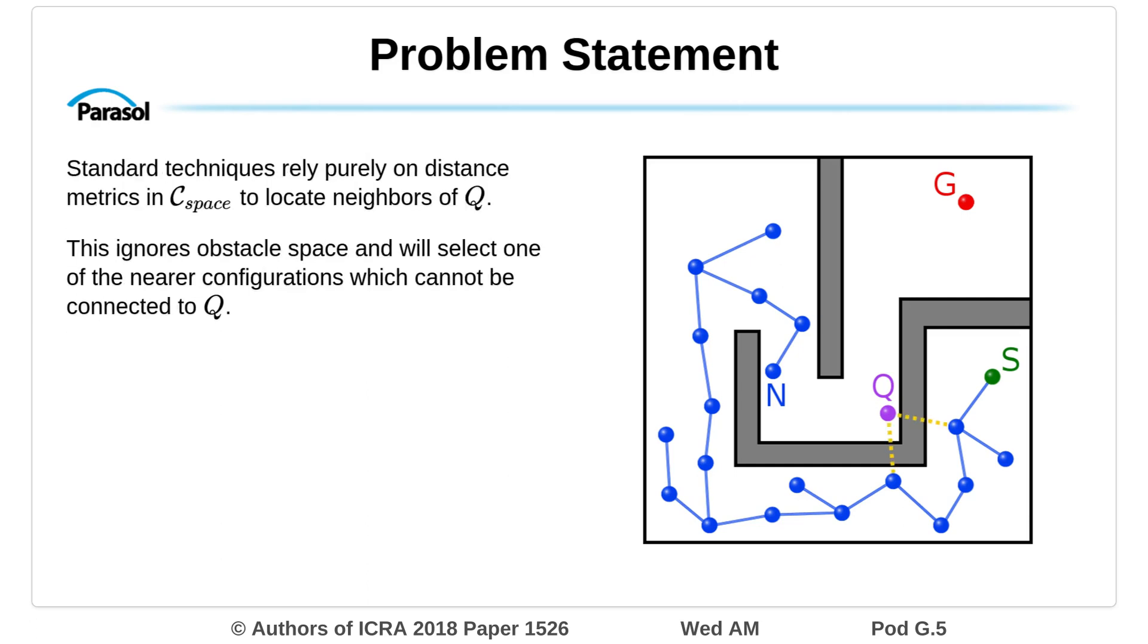Standard techniques rely purely on distance metrics in C space to locate neighbors of Q. This ignores obstacle space and will select one of the nearer configurations which cannot be connected to Q.